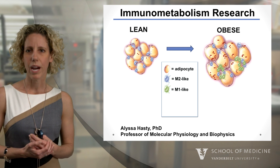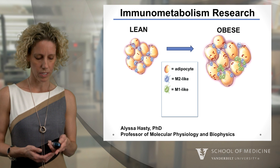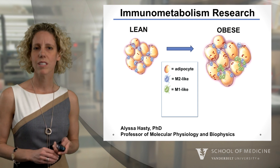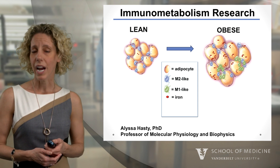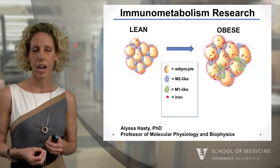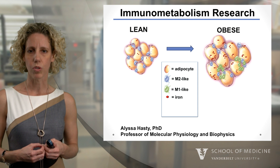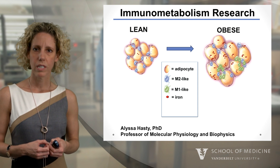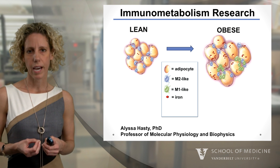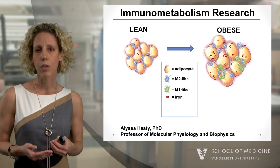Beyond macrophages, our field is interested in many different immune cells present in the adipose tissue. On this slide, the little red dots indicate iron. In obesity, the adipocytes themselves accumulate excess iron, and that excess iron also induces insulin resistance in the obese adipose tissue. One of the things my laboratory is interested in is how these M2-like macrophages might be controlling iron content in the adipose tissue, potentially to protect the adipocytes from becoming iron overloaded. We have ongoing studies in that area.